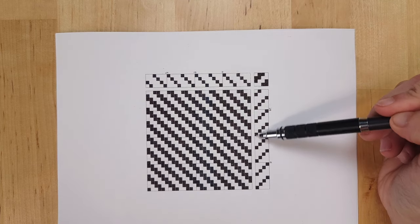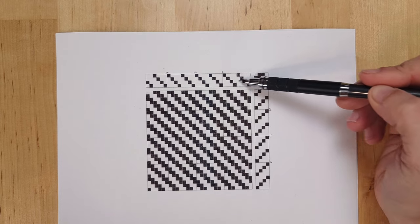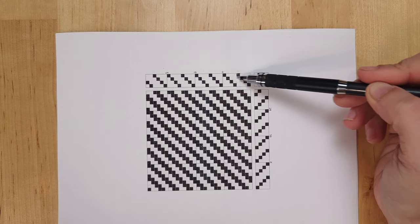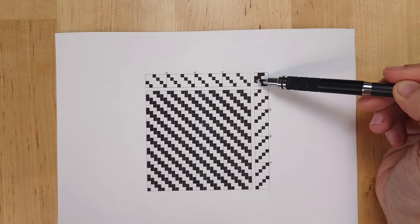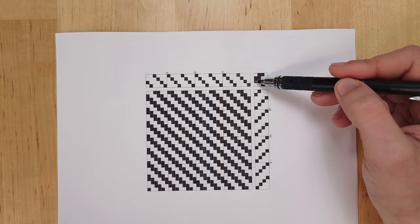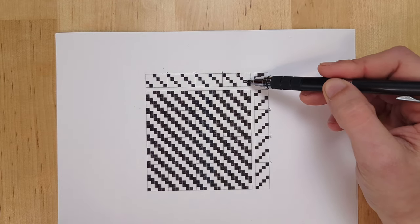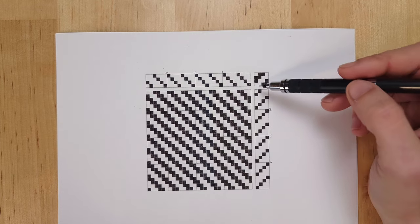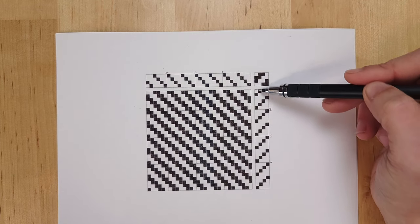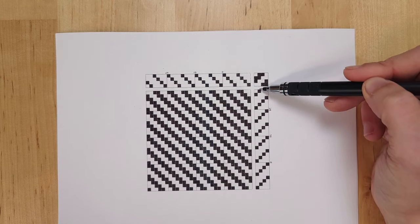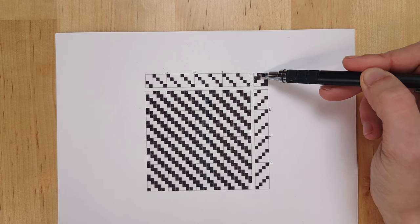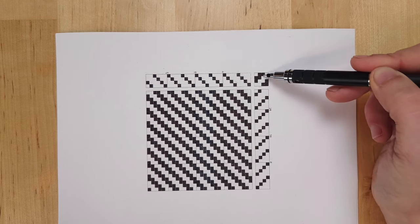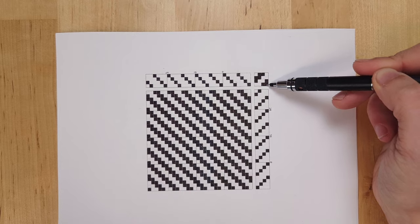You can see that this first treadle here is tied to shafts two and three. So you'd go under your loom and you find your first treadle and you tie it to shaft two and then shaft three. Then you just do that for the rest of the treadles. So in our chart we can see that treadle two is tied to three and four, three is tied to one and four, four is tied to one and two.